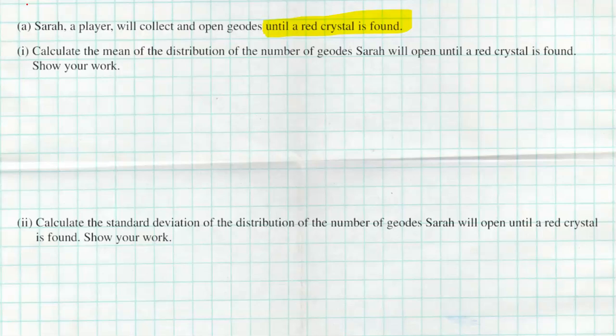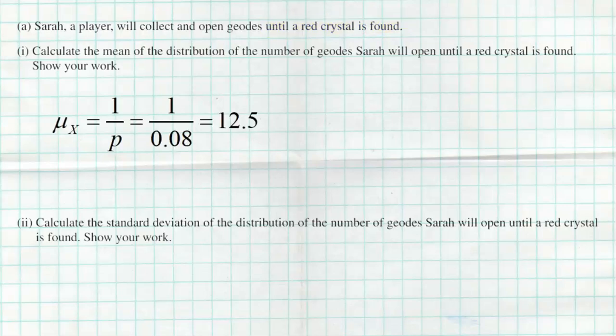The first question says: calculate the mean of the distribution of the number of geodes Sarah will open until a red crystal is found. All you have to do is go to that formula sheet. On the front page, there's a row for geometric random variables, which is exactly what this is. The mean formula is 1 divided by P. X is the number of geodes Sarah will open until she gets that first red crystal. So 1 divided by 0.08 is 12.5 — in the long run, she'll open an average of 12.5 geodes until she gets her first red crystal.